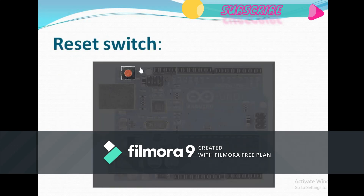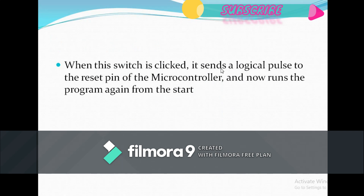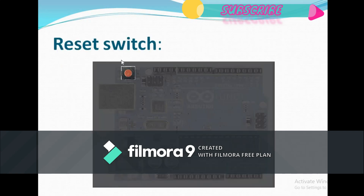The reset switch — if you want to repeat your program multiple times, you just press that reset switch and your program will repeat. When the switch is clicked, it sends a logical pulse to the reset pin of the microcontroller and the program runs again from the start.